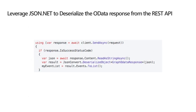Using JSON.NET to deserialize the OData response: once the request is issued, read the whole response back as a string, call JsonConvert.DeserializeObject with the type of the custom object you created, and pass in the JSON string. Once done, you have a strongly typed object you can work with like result.Events.